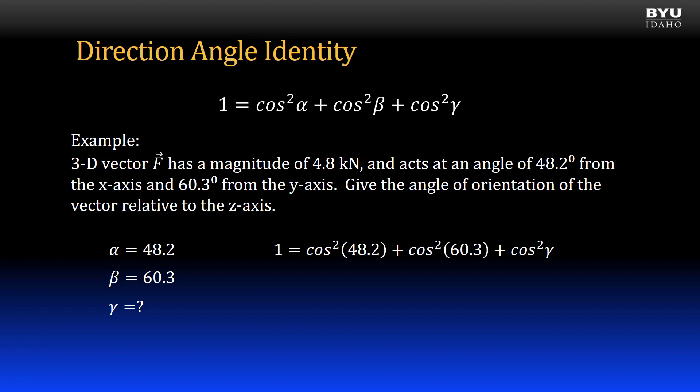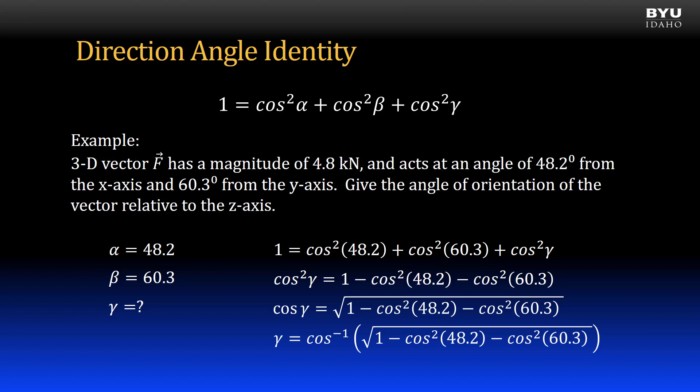First, I fill in the known information. Then I use algebra to rearrange the equation and isolate the cosine of gamma. Finally, I take the inverse cosine of both sides to get gamma. It is equal to 56.1 degrees.